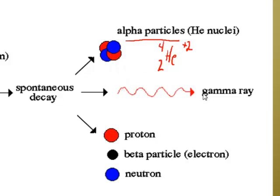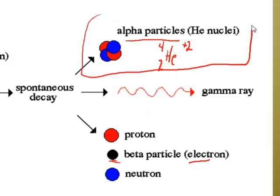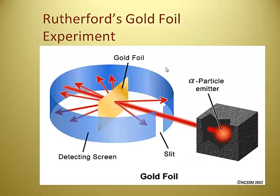You can also get out gamma rays, which are pure energy, and you can get out beta particles too — those beta particles which are called electrons. The big deal here is what Geiger, Marsden, and Rutherford were working with. They're going to use alpha particles. Here's a picture of what they did — they did an experiment with our favorite element: gold.